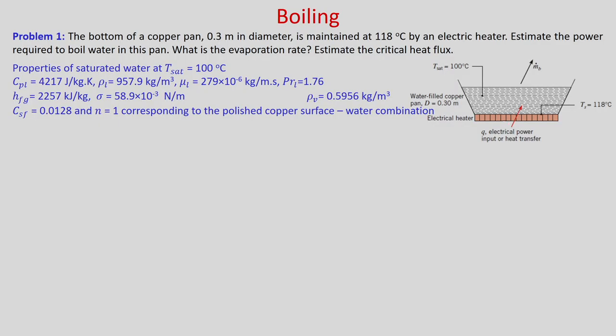The copper pan has a bottom diameter of 0.3 meter. Properties of saturated water at T-sat 100 degree centigrade are given: CPL, rho L, mu L, Prandtl number of liquid, and from the steam table you will get HFG as well as the vapour density rho V. Sigma is the surface tension. The rho L value is of the order of 1000 and rho V is of the order of 1, so rho L is much greater than rho V.